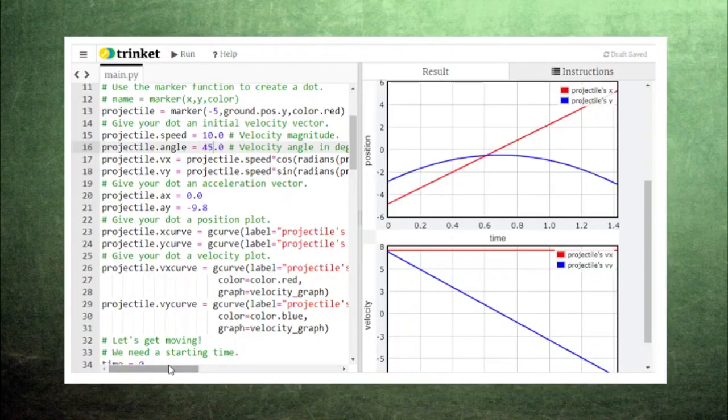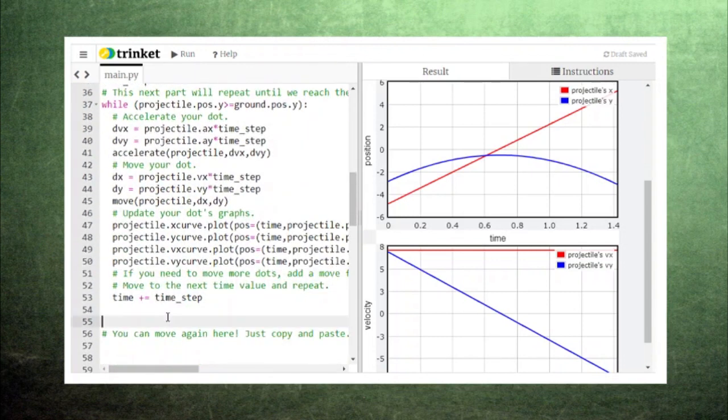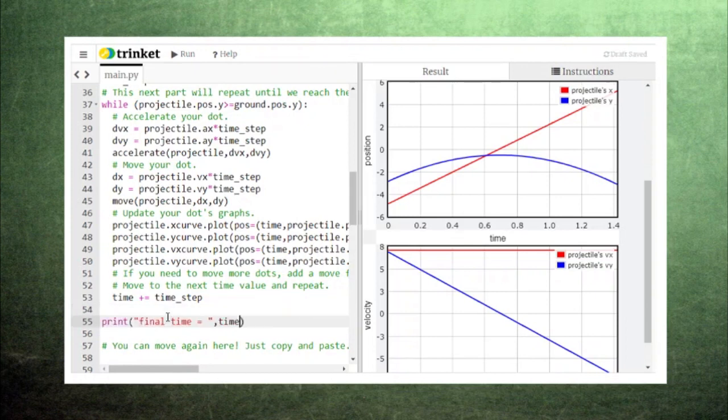Finding out the final time is pretty straightforward. Our time starts at zero and increases by an amount time step with each run of the loop. So, after finishing the loop, we can tell the computer to print the last value of time for us.